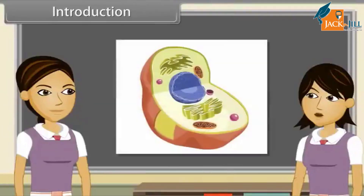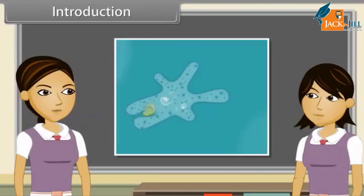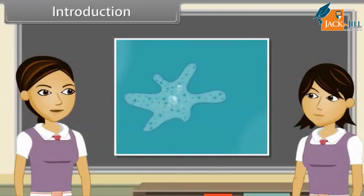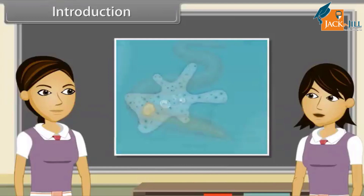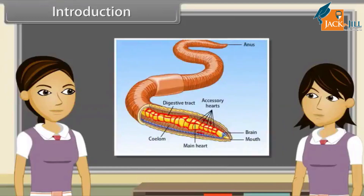We know that the cell is the structural and functional unit of life. Do you know what does it actually mean? It means a single cell can perform all basic functions of life, for example movement, intake of food and respiratory gases, respiration, and excretion. This is true for a single cell or unicellular organisms.